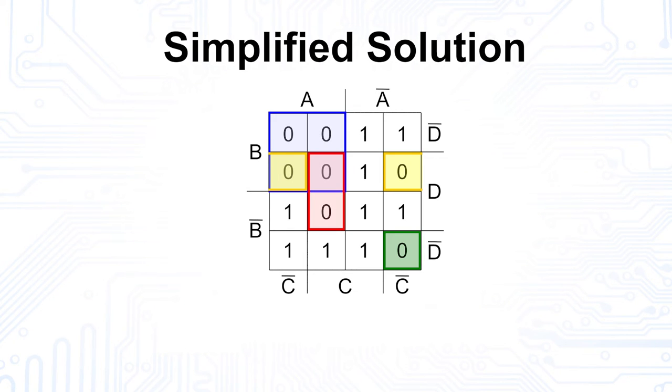Once you have identified all fields and there are no single low states left, you can directly read the minimized Boolean equation. Thus, the min term a and b can be derived from the upper arch field.